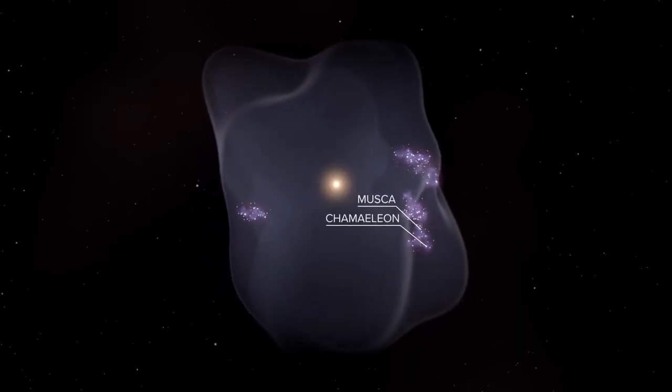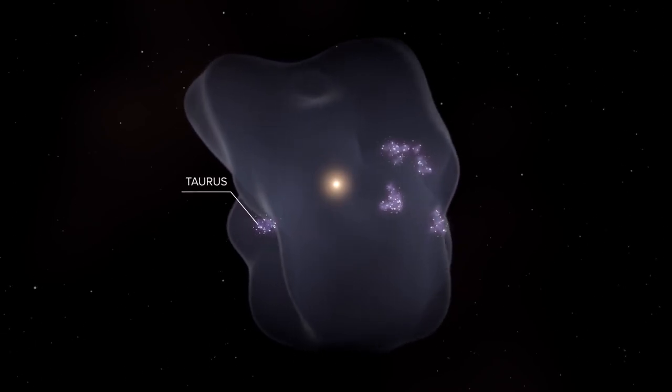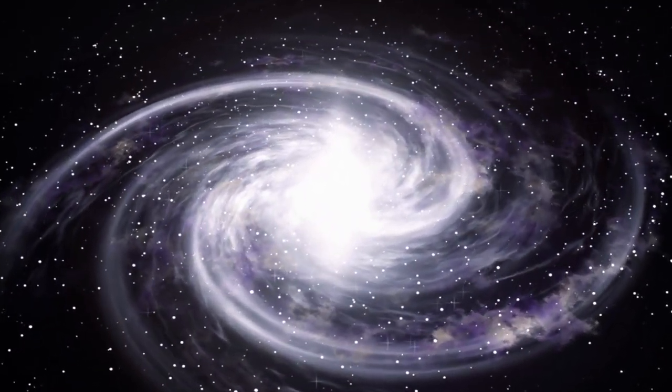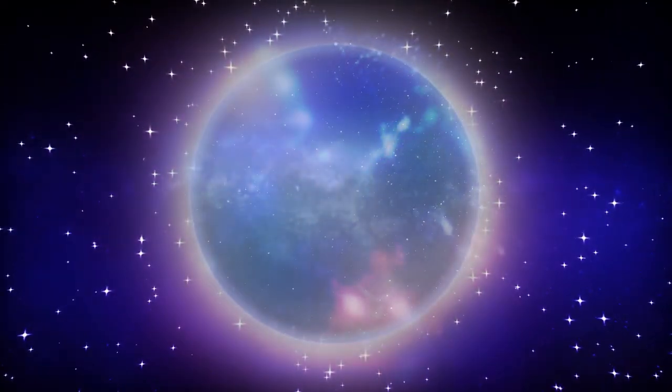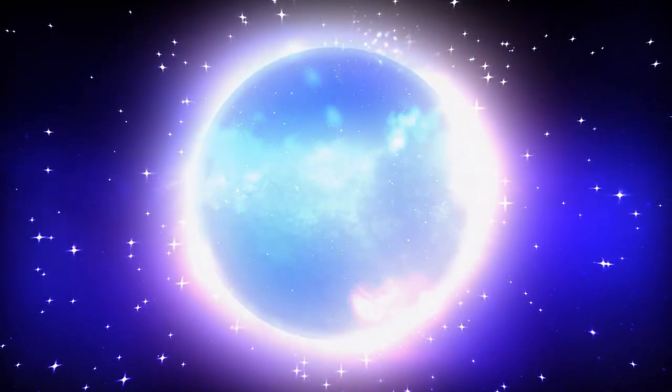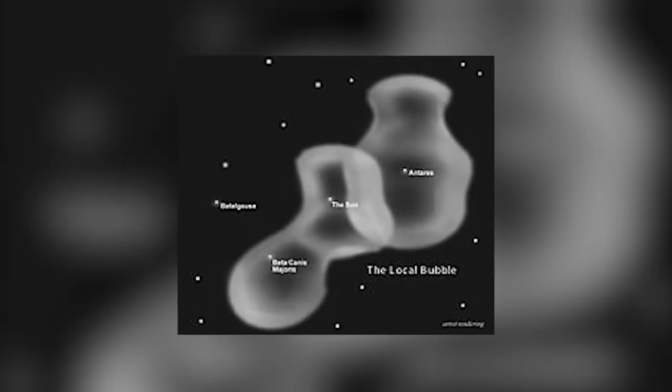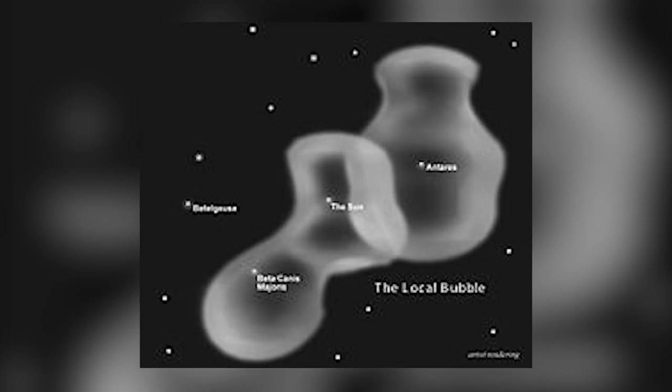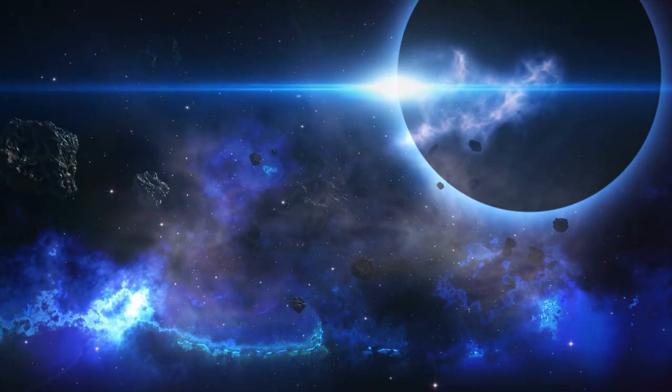According to some calculations, this local bubble began its formation about 14 million years ago. And for the formation, it is vital that about 15 supernovae exploded for several million years. It is believed that a series of these explosions forced the interstellar gas outwardly with the pressure of light, eventually creating a huge structure like a bubble with a dense boundary surface. Even to this day, this bubble grows in size continuously.